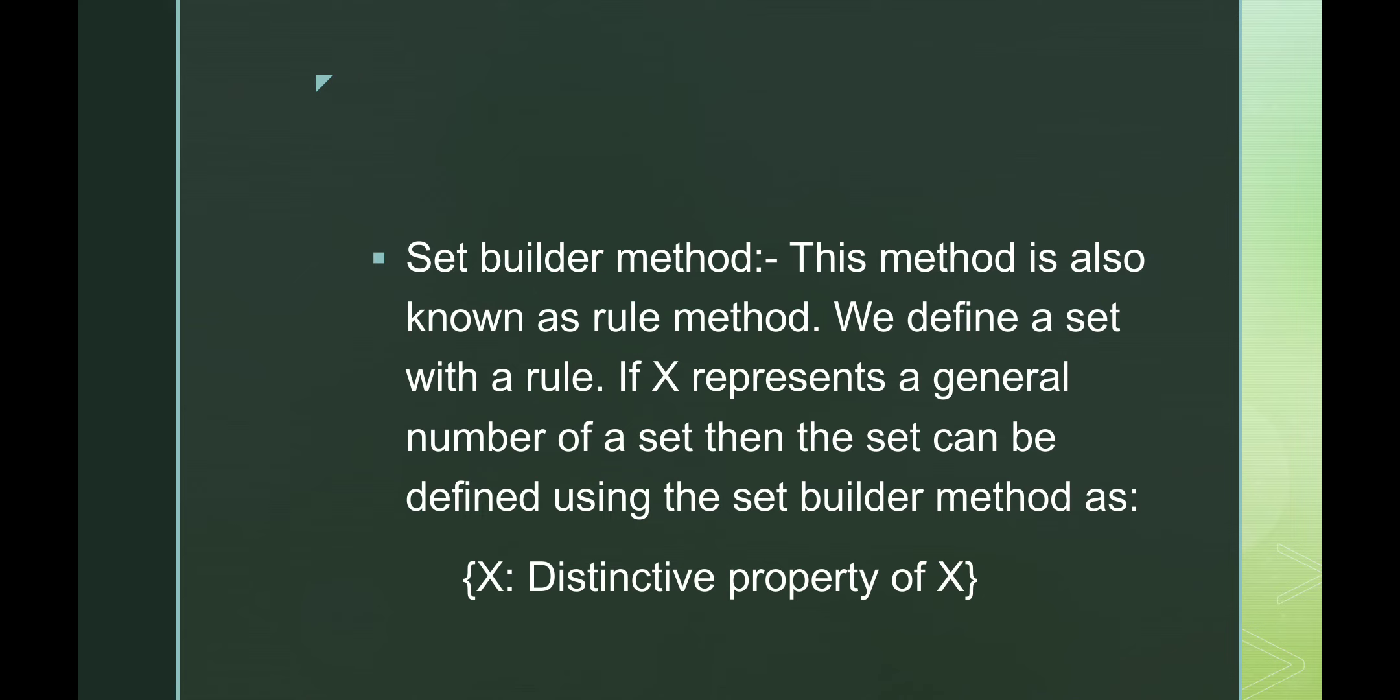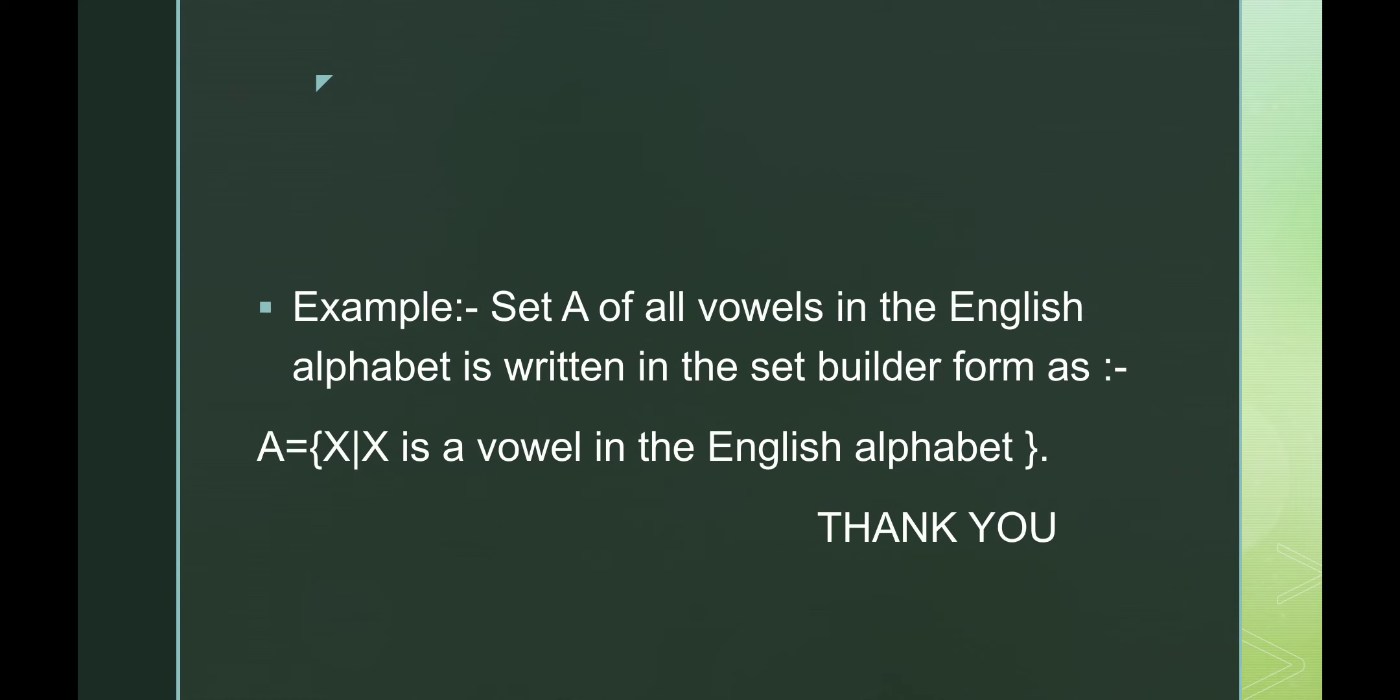If X represents a general number of a set, then the set can be defined using the set builder method as X. For example, set A of all vowels in the English alphabet is written in the set builder form as A equals within the bracket X. The vertical line implies such that we say the vertical line, we read it as such that X such that X is a vowel in English alphabet.